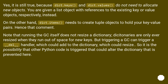Yes, it is still true, because dict.keys and dict.values do not need to allocate new objects. You are given a list object with references to the existing key or value objects respectively. On the other hand, dict.items needs to create tuple objects to hold your key-value pairs — hence that comment.